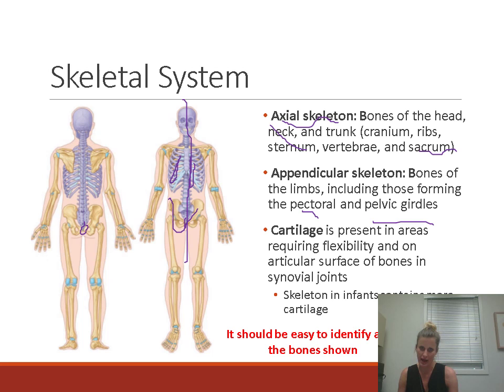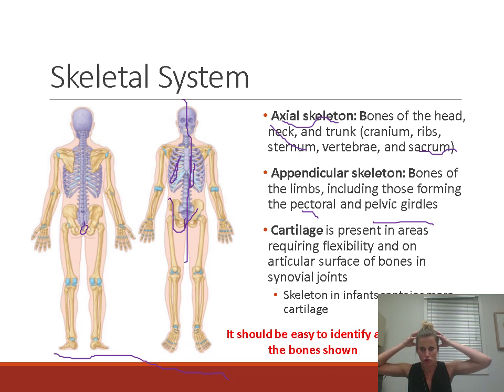You should be able to identify all the bones on the skeleton diagrams — specifically not just 'skull' but frontal, parietal, temporal, occipital, and all the other named bones. If not, review immediately.